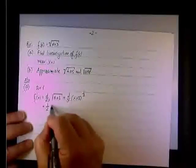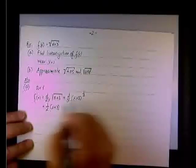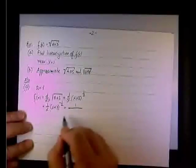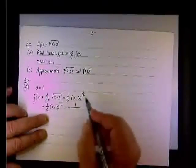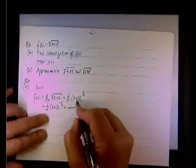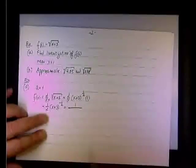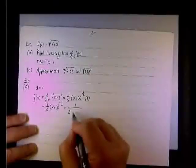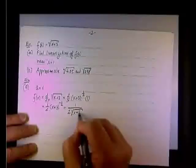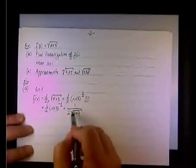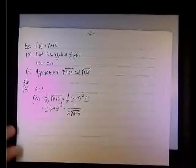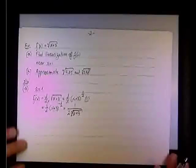So it would be 1/2 times (x+3) to the power of 1/2 minus 1, or negative 1/2. Or, if you go back to radical notation, you end up having, by the way, what about the chain rule? The chain rule is derivative of x plus 3. Well, the derivative of x plus 3 is 1, so that's why I didn't write it, but we end up having 1 over 2 times the square root of x plus 3. This is something that you should remember, rather than redo it every time. The derivative of a square root of a function is 1 divided by 2 times the square root.